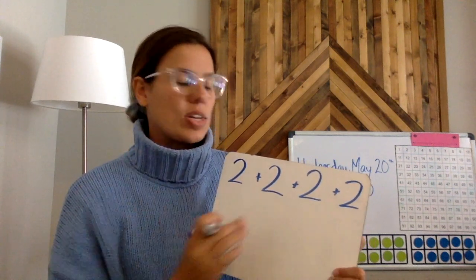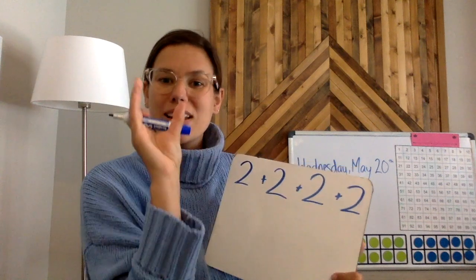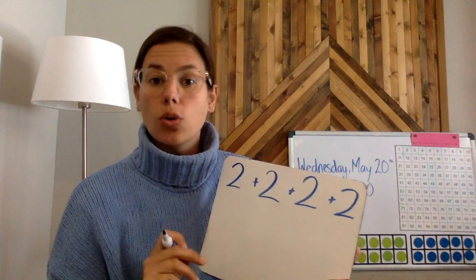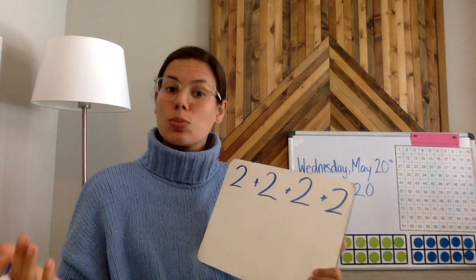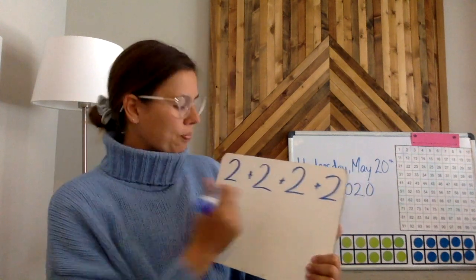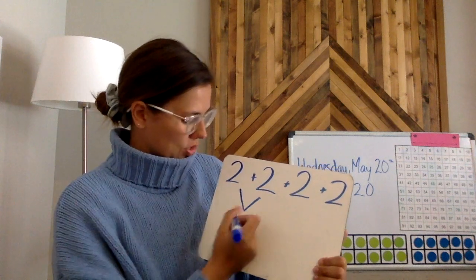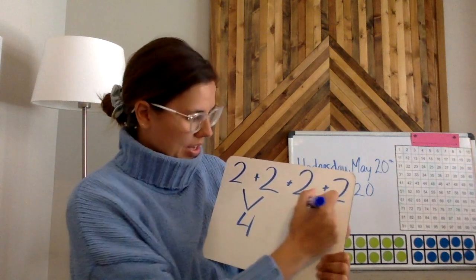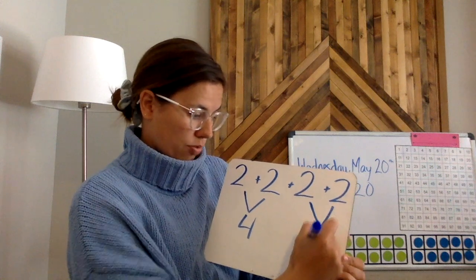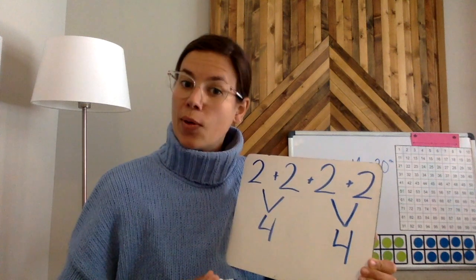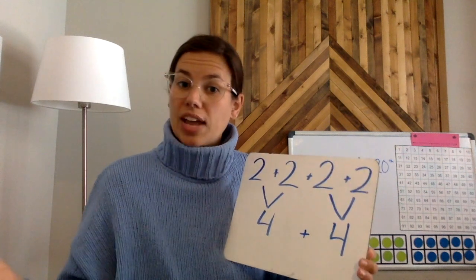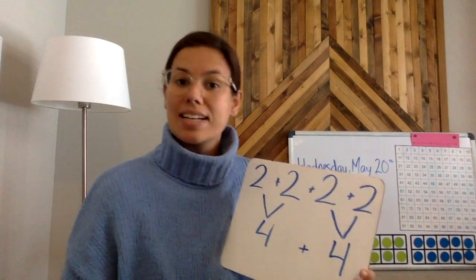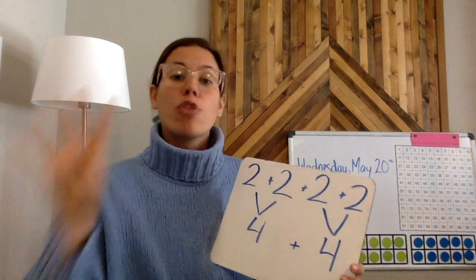Now what he did was he took this big long equation and he made it shorter into smaller equations that he thought were really easy to do in his head. And because he's getting super good at doubles now that we've been practicing so much, he knows that 2 + 2 = 4. And again, 2 + 2 = 4. So now all he has to do is add 4 + 4, which again is like doubles and 4 + 4 = 8. So he knows that for his four circles, he spent eight cents.